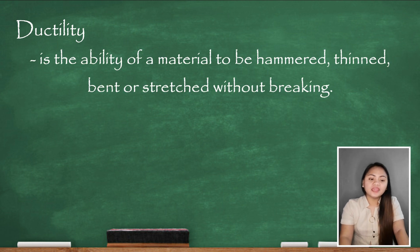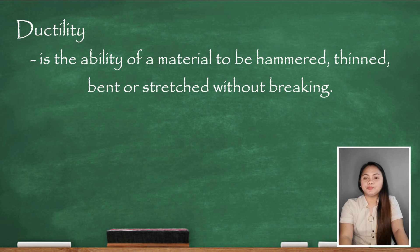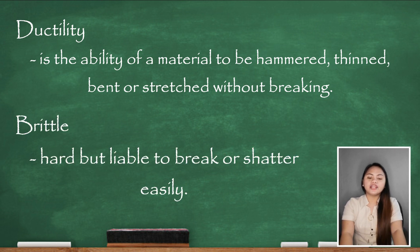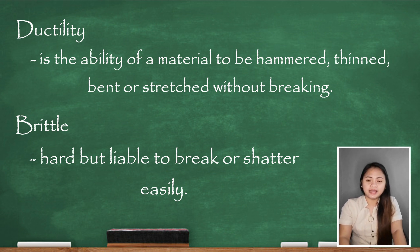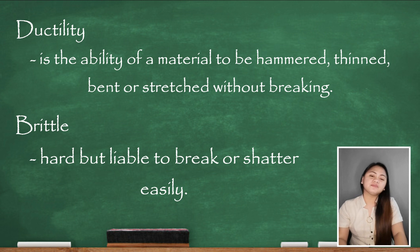Ductility is the ability of materials to be hammered thin, bent, or stretched without breaking. A material is ductile when we can bend or stretch it without it being destroyed. On the other hand, brittle means hard but liable to break or shatter easily. If a solid material breaks when we try to stretch or bend it, that means it is brittle.